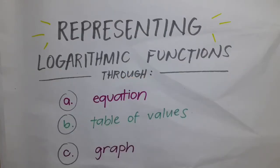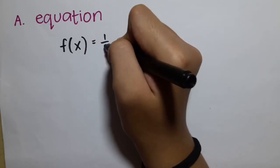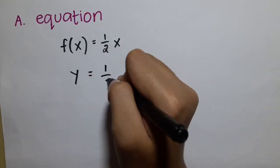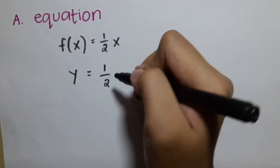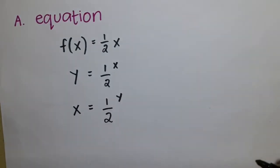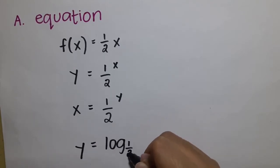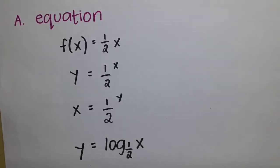Let's go to our second example. Now, let's use a base less than 1, for example, 1/2. To find the logarithm equation of it, simply change f of x to y, swap x and y, and convert into logarithm equation, which is logarithm of x to the base of 1/2.